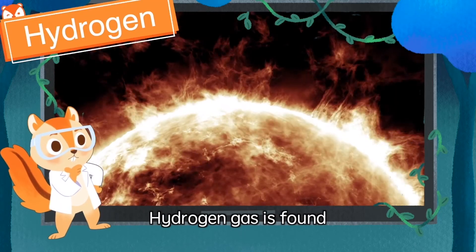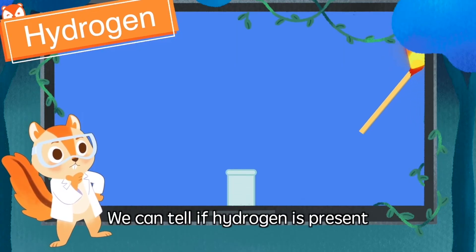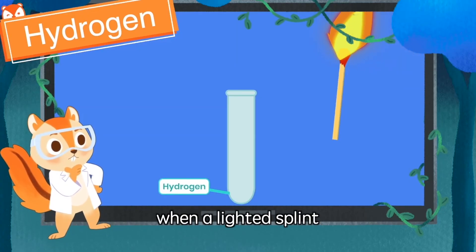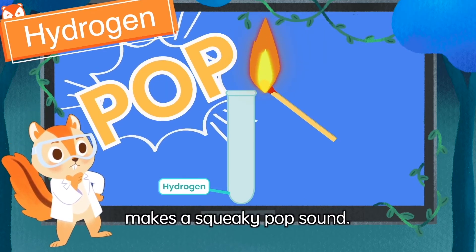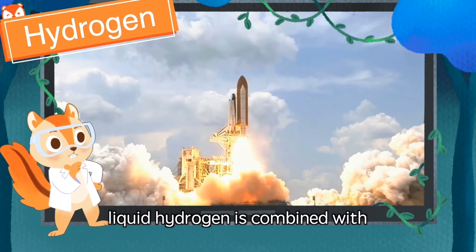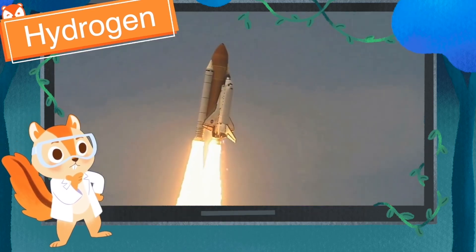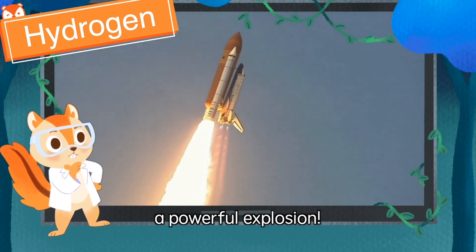Hydrogen gas is found in the core of our sun and most stars. We can tell if hydrogen is present when a lit splint makes a squeaky pop sound. Hydrogen is used as a rocket fuel where liquid hydrogen is combined with liquid oxygen to produce a powerful explosion.